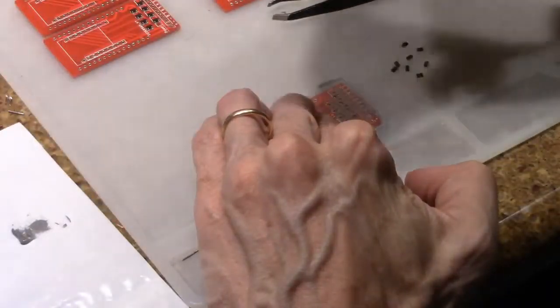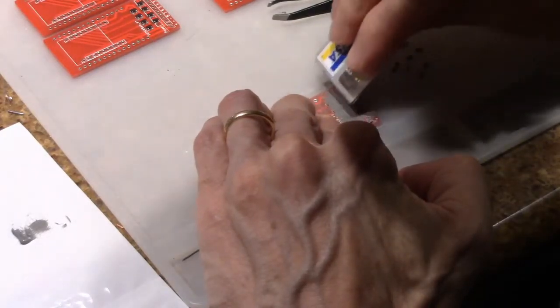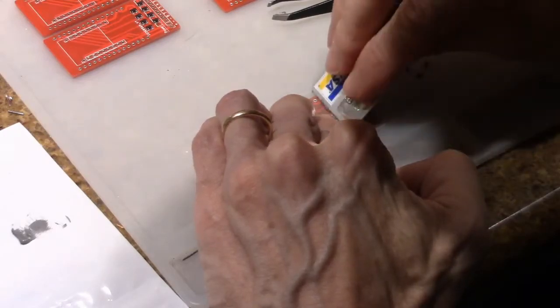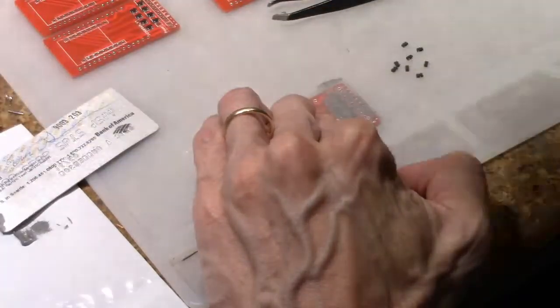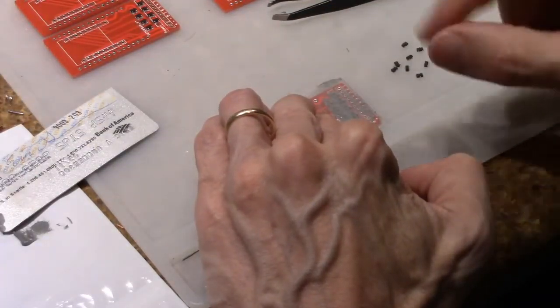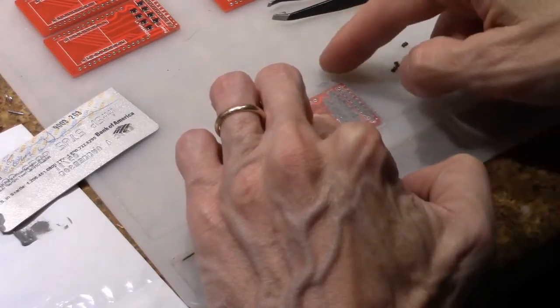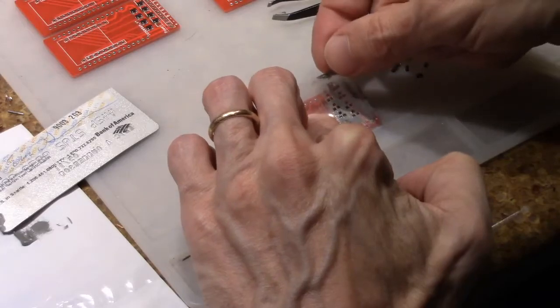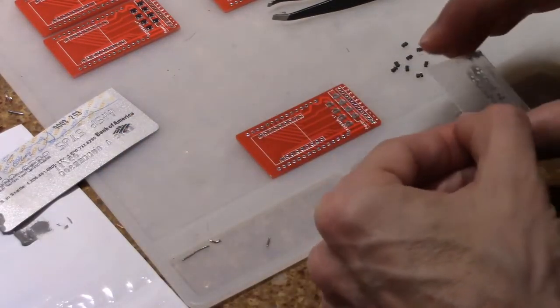So a little solder paste out here and then I'm just scraping it across until I fill each hole. It takes a little while getting used to this. You need enough pressure that you fill but not so much pressure you kind of squeeze out underneath. Then after that I'm going to lift one of the edges up of the stencil and then that gives me the image with the solder paste.